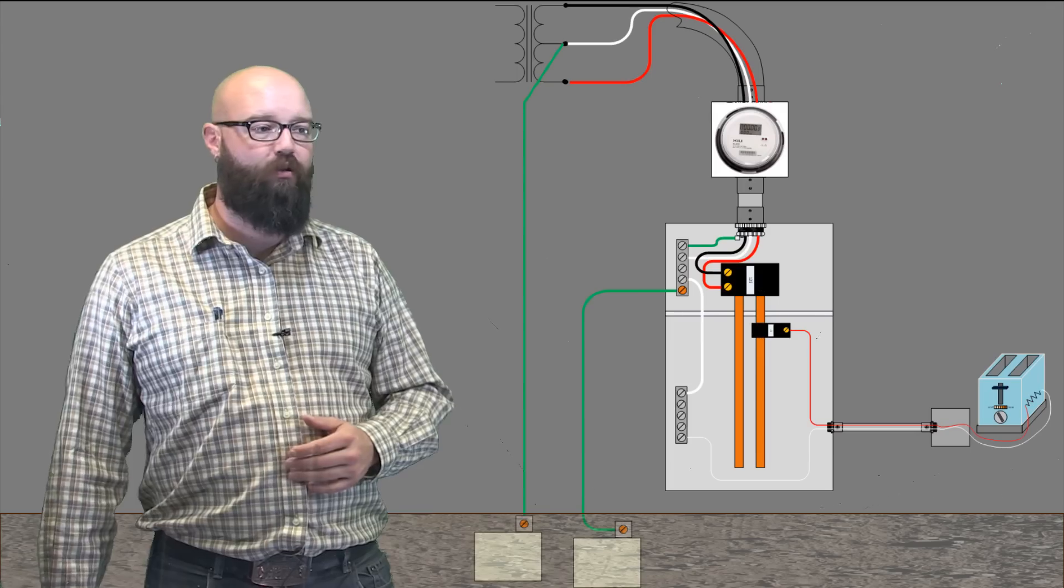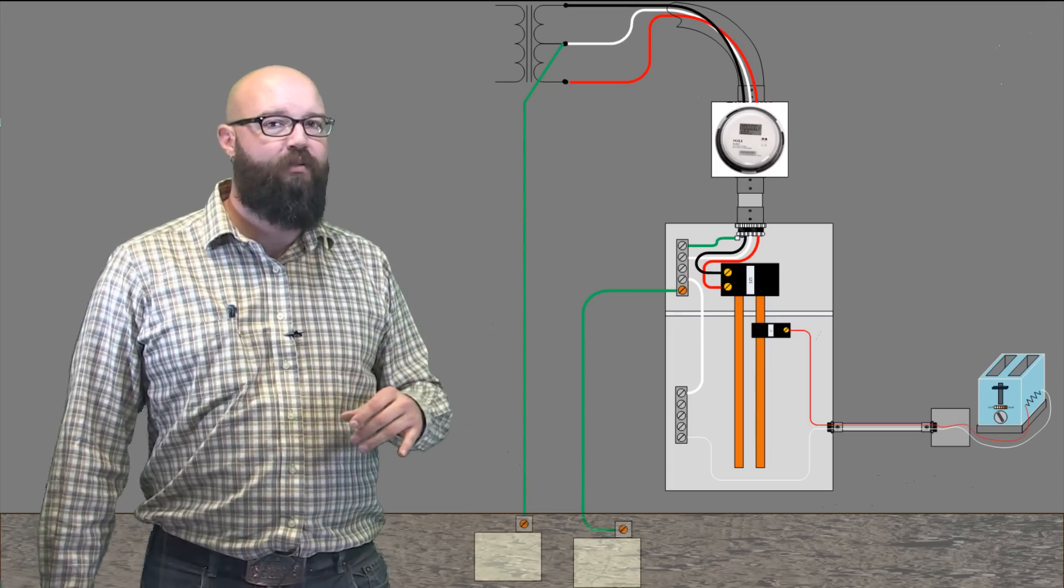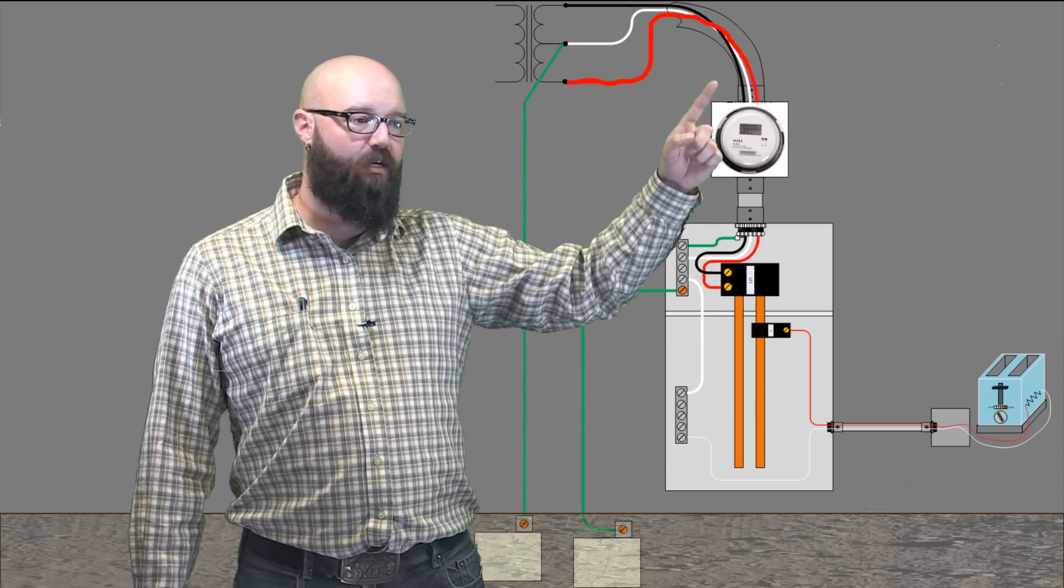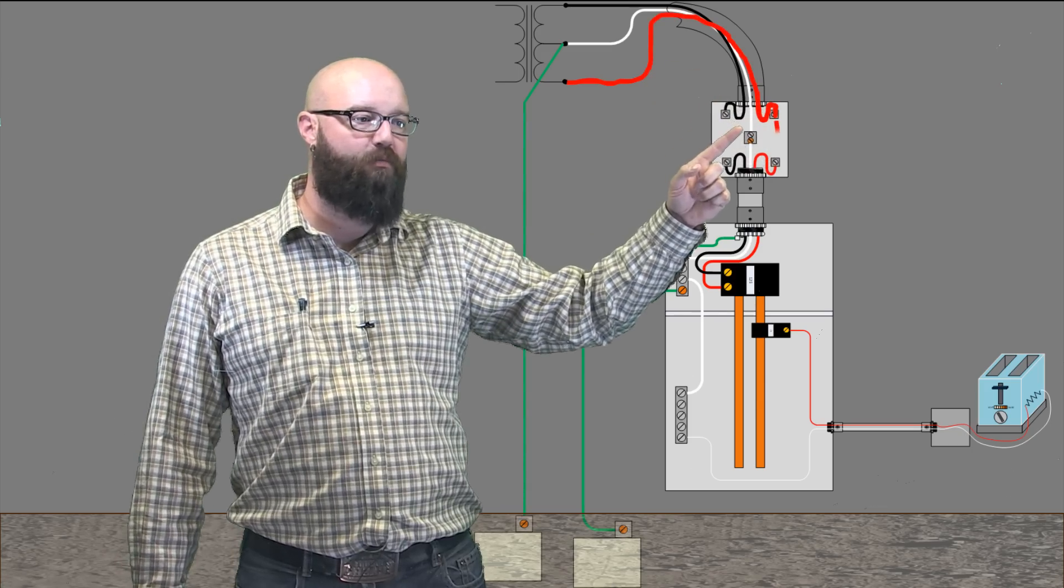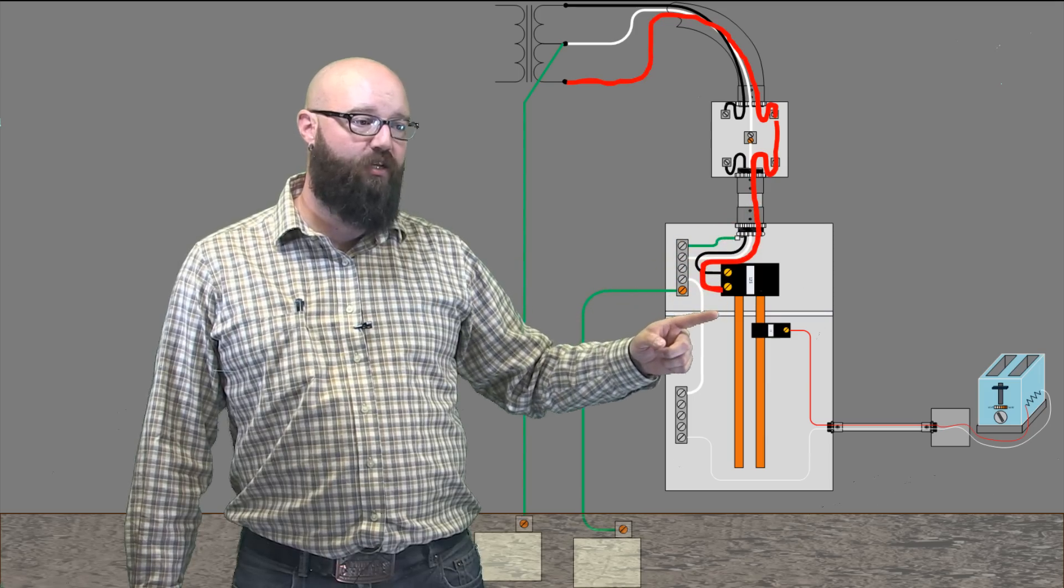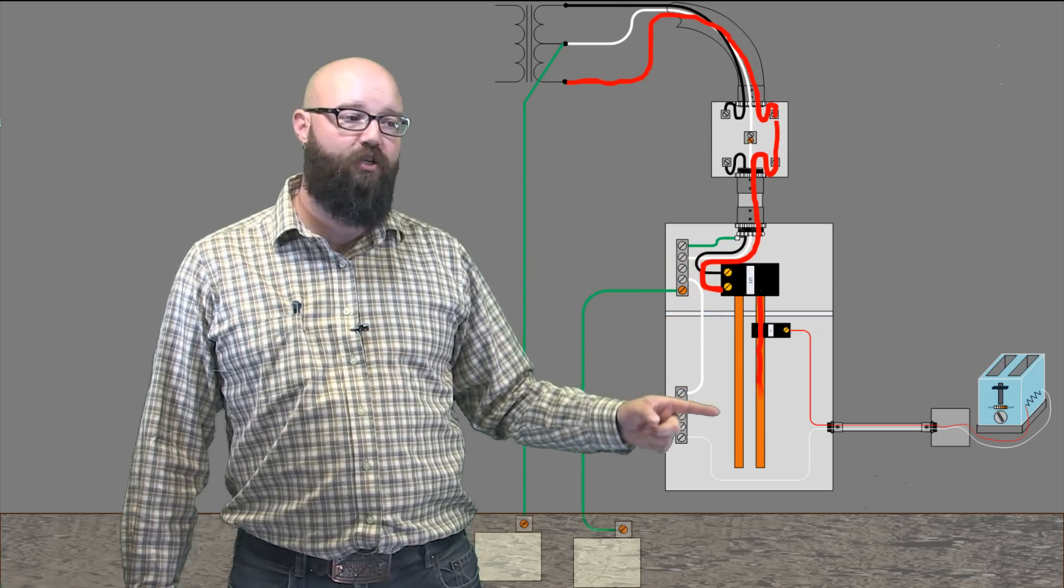So the next thing we want to do, we'll clear the system. We're going to look at what happens in a fault condition. So we'll go through the same method. We're going to highlight these conductors up to the meter base. The meter base makes that connection, comes down, energizes up to our breaker. Our breaker energizes our feeder.